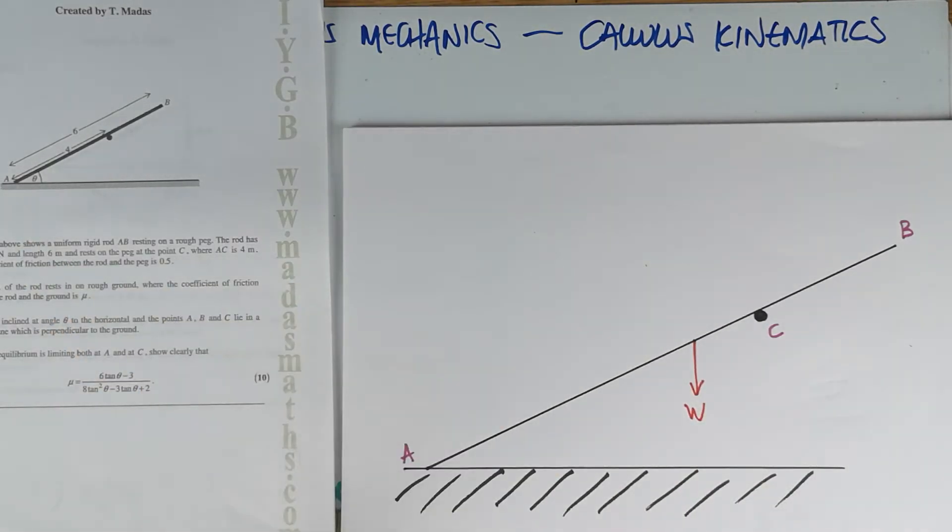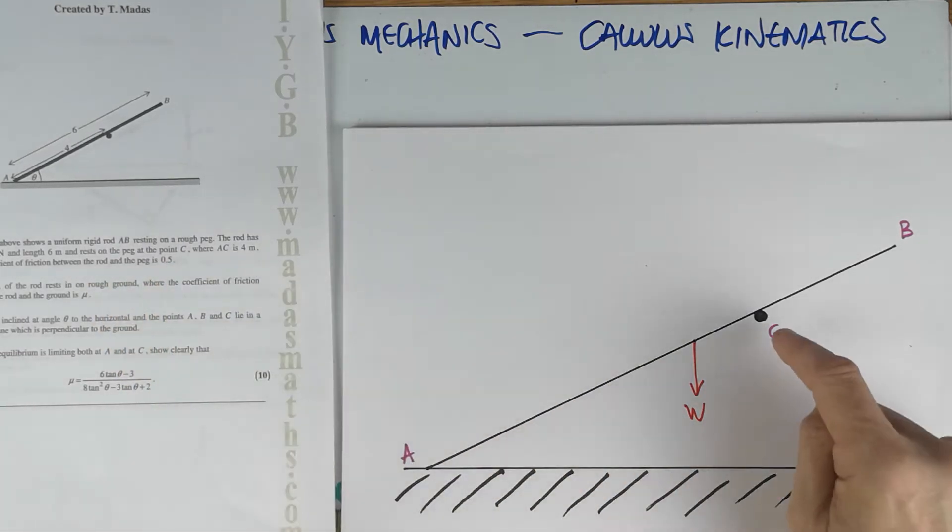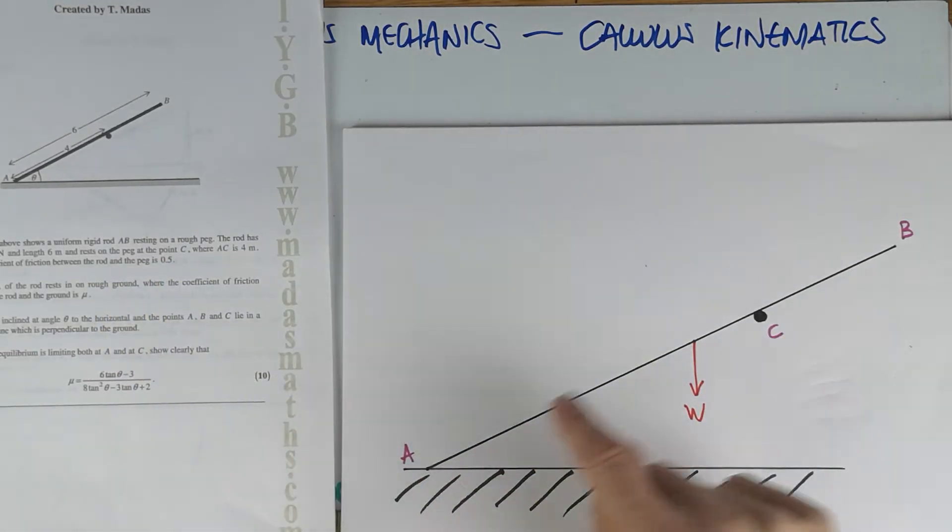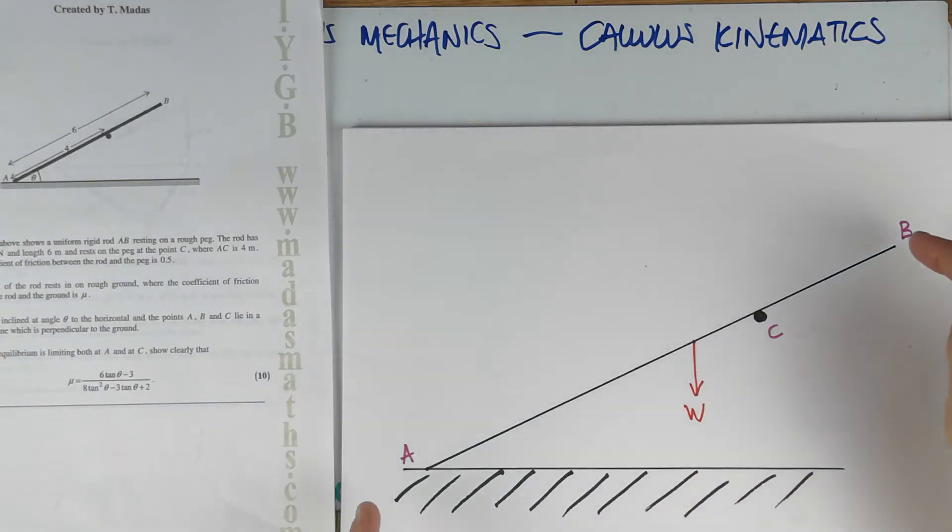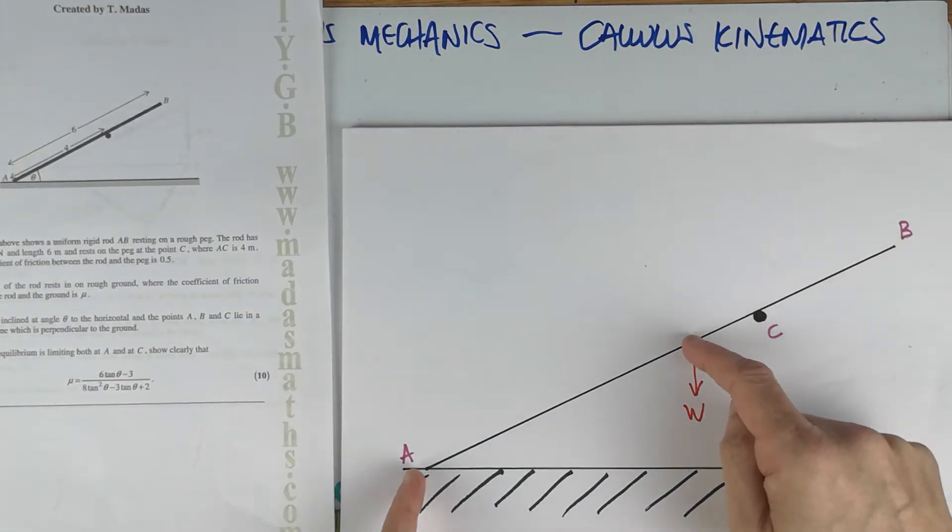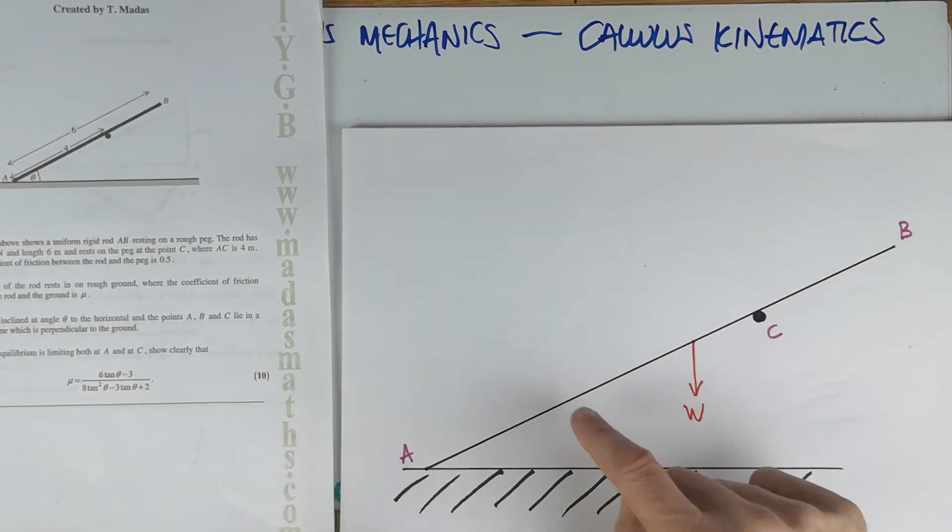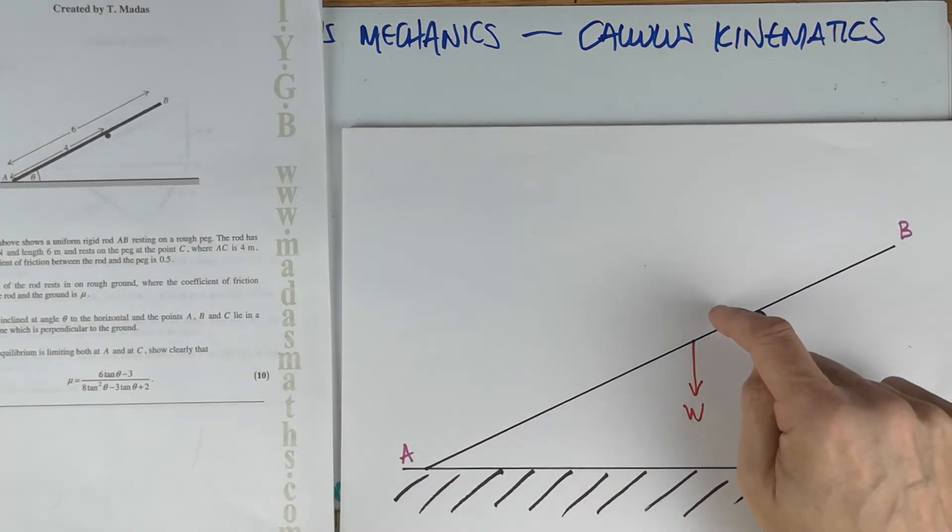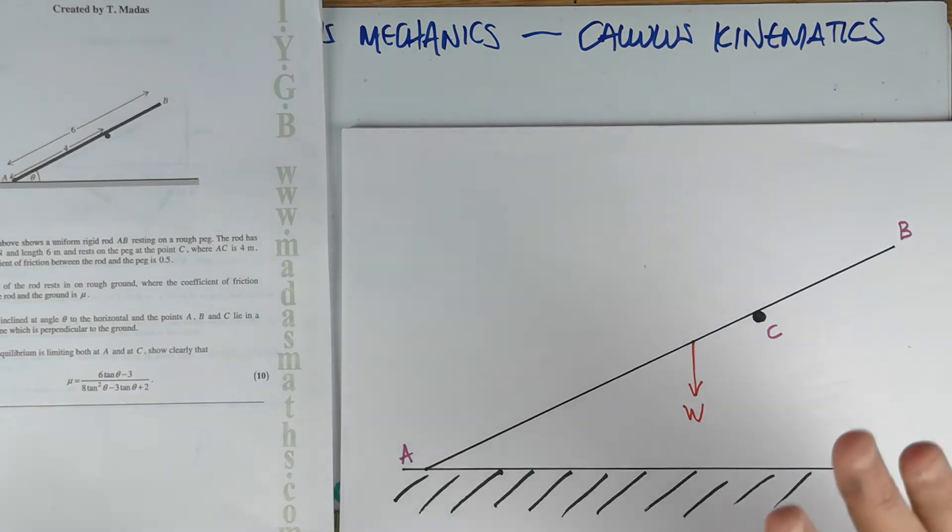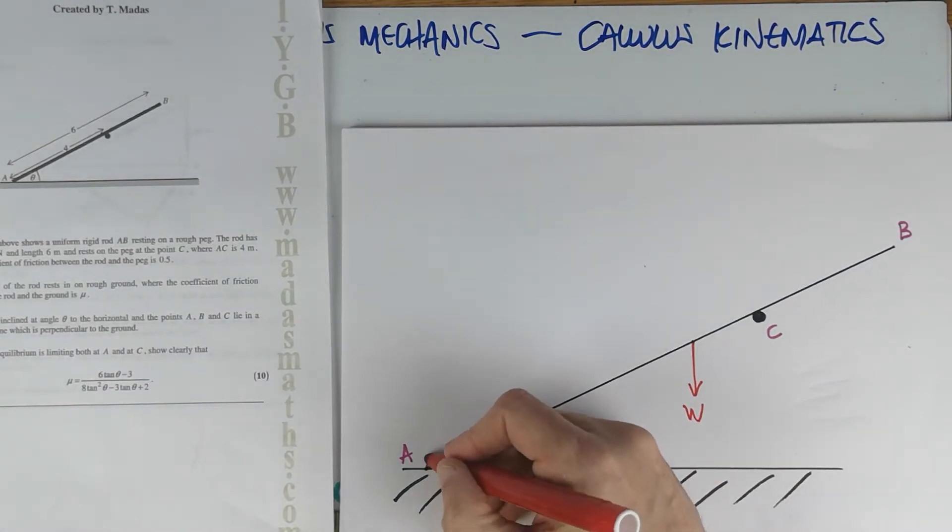Length 6 meters. With this type of question, I do not put the length until the very end. Rest on the peg at point C, where A to C is 4 meters. I've been told this is 6 meters, uniform, so it's 3 and 3. This is 4, so that's 3, 1, 2. I'm going to mark it at the very end.